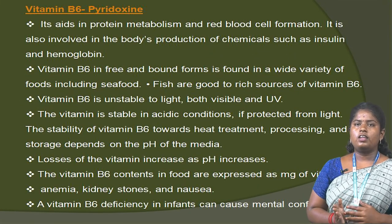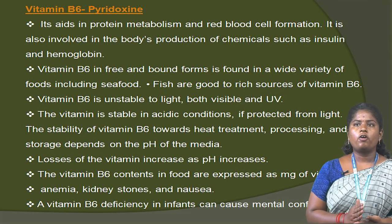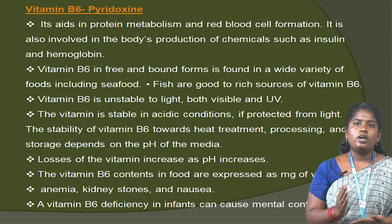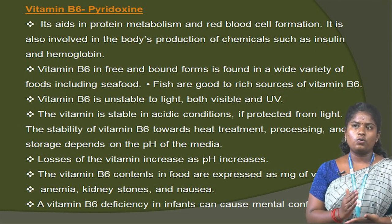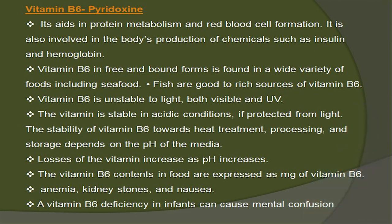Vitamin B6, also known as pyridoxin, aids protein metabolism and red blood cell formation. It is also involved in the body's production of chemicals including serotonin and hemoglobin. Vitamin B6 in free and bound forms is found in a wide variety of foods including seafood. Fish are a good to rich source of vitamin B6. Vitamin B6 is unstable to light, both visible and UV, and is stable in acidic conditions when protected from light. The stability of vitamin B6 towards heat treatment, processing and storage depends on the pH of the medium; loss of the vitamin increases as pH increases. Deficiency of vitamin B6 can cause anemia, kidney stones and nausea, and in infants can cause a mental condition.